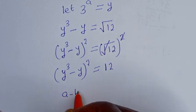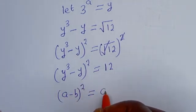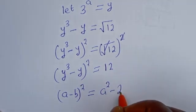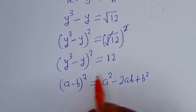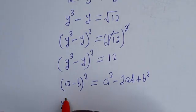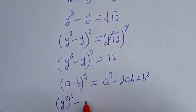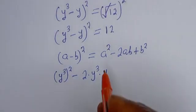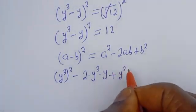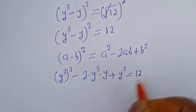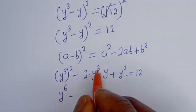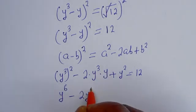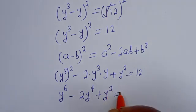Take note that if you have a minus b, all squared, this is equal to a squared minus 2ab plus b squared. Substituting into our form, we have y raised to the power of 3, squared, minus 2 times y to the power of 3 times y, plus y squared, is equal to 12. This gives y to the power of 6 minus 2y to the power of 4 plus y squared equals 12.